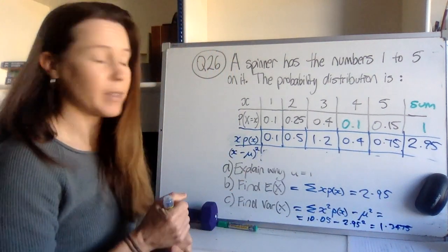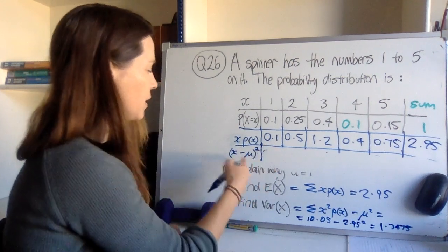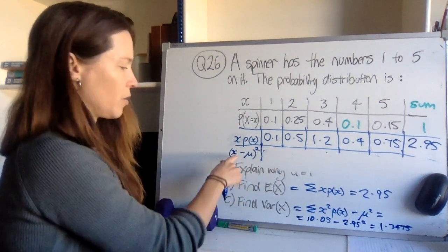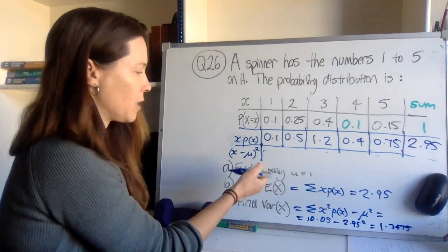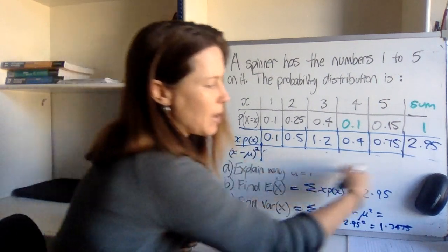Now, if you'd used the first formula, that would have been fine. But instead on this row, you would have needed to take the mean away from each score and then square it. And then on the row below, you'd need to multiply those by the probabilities, and then when you add them up, then you'd have your 1.3475 at the end of that.